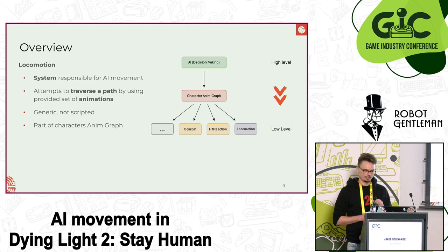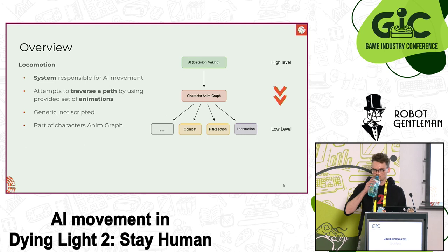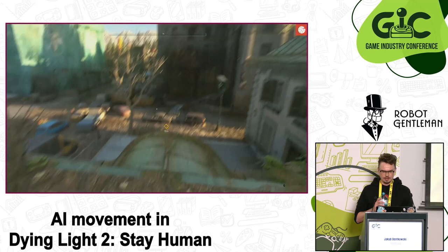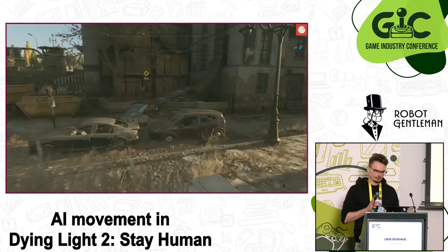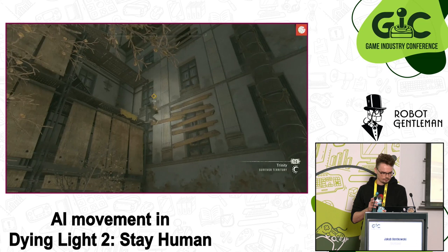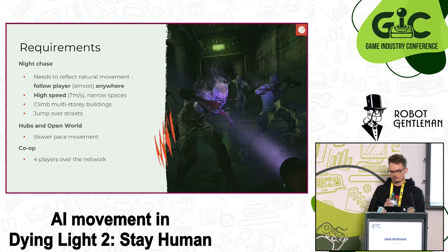Here you can see an example of locomotion in action. One of our characters, Hakon, is parkouring around the city. He acts as a mentor to the player at the beginning of the game. An interesting fact: both his face and his movements are based on David Bell, one of the founders of parkour.